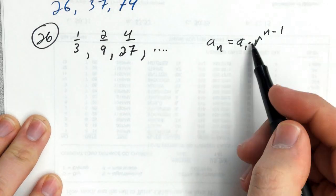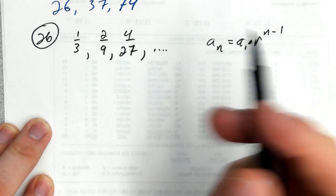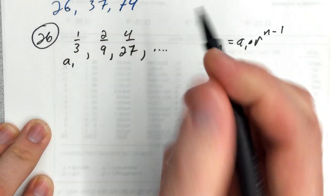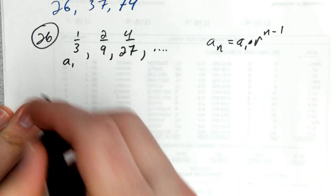So we can get a rule if we have two things: the first term and the common ratio. We have the first term, that's given. We're missing the common ratio, so we have to go figure out what that is.